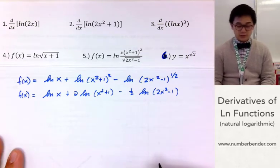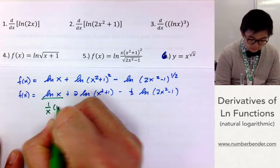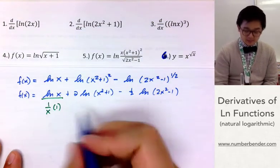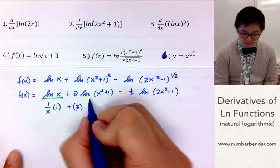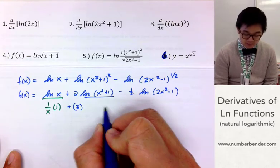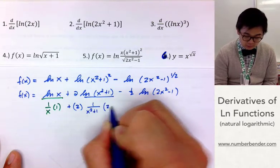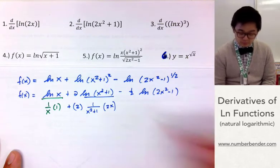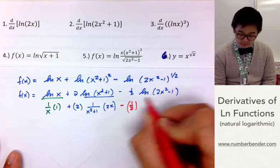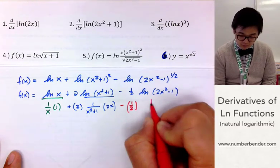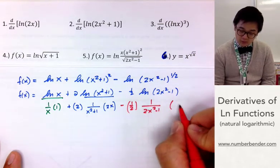Let's go ahead and take the derivative of each term. The derivative of the first term is simply 1 over x. For the second term, we ignore the constant 2 and take the derivative of ln(x² + 1), which is 1 over (x² + 1) times the derivative 2x. For the third term, we ignore 1/2 and take the derivative of ln(2x² − 1), which gives 1 over (2x² − 1) times the derivative 4x.